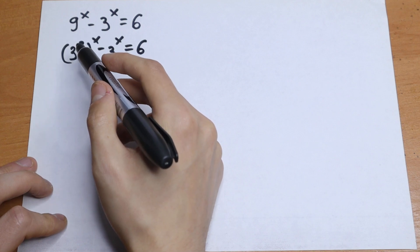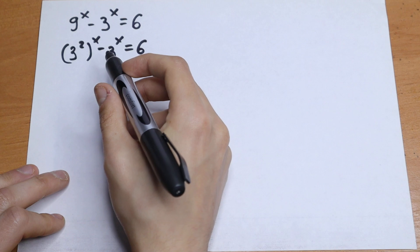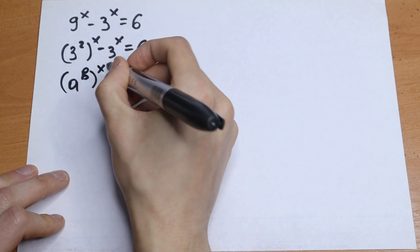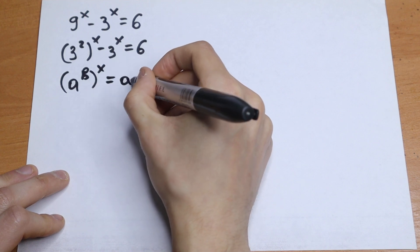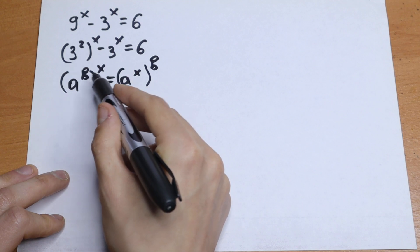Just express this 9 as 3 squared. What we're going to do next, we need to know about the rule of interchange. If we have a to the power b raised to the power x, we can write this as a to the power x raised to the power b. We can swap our exponents, our powers.